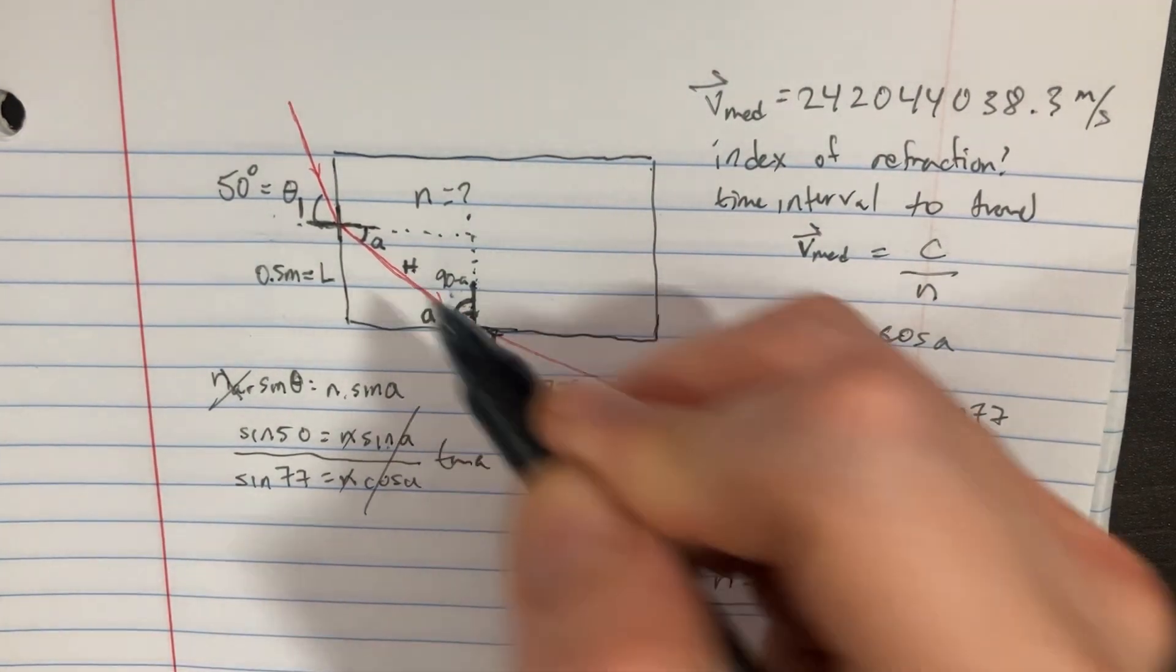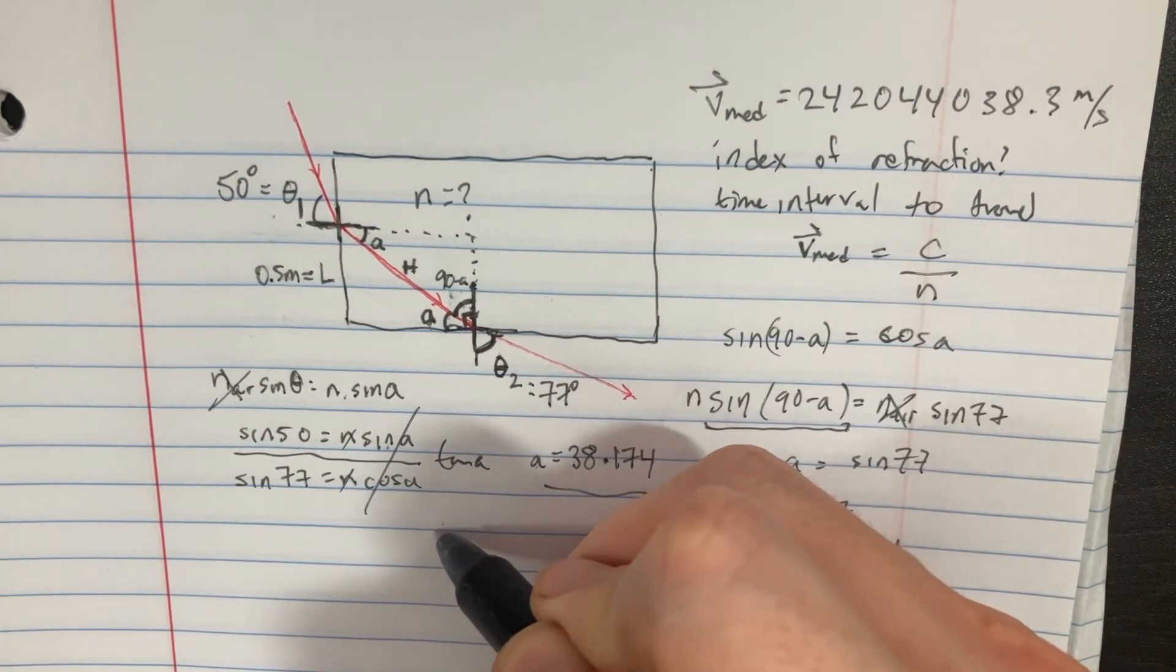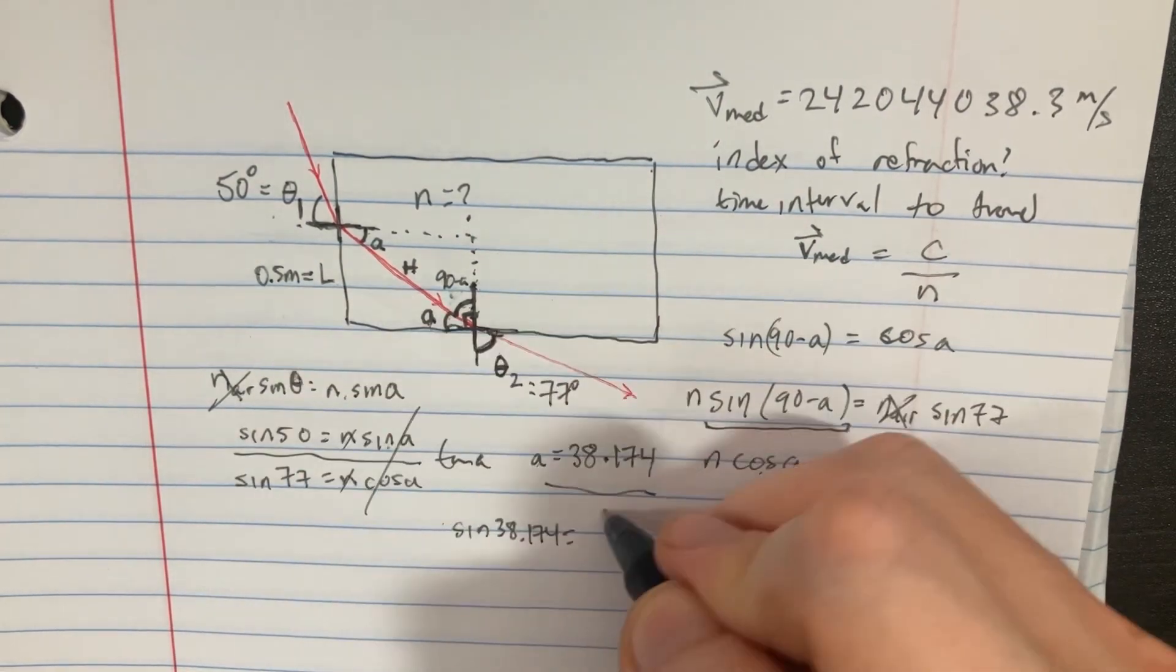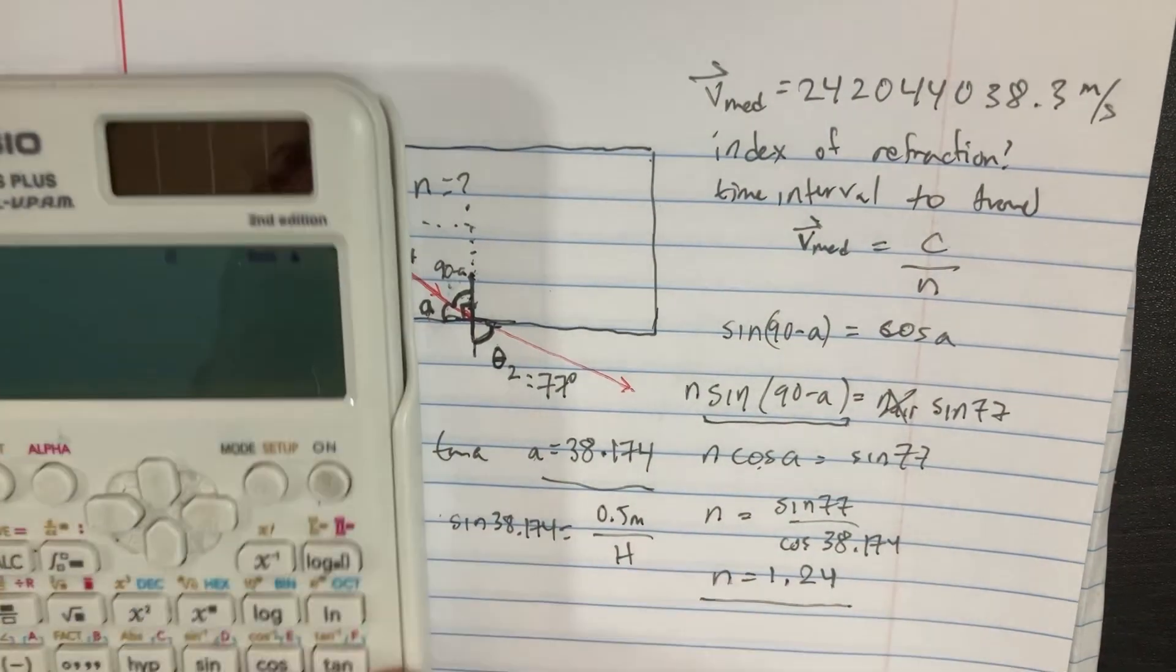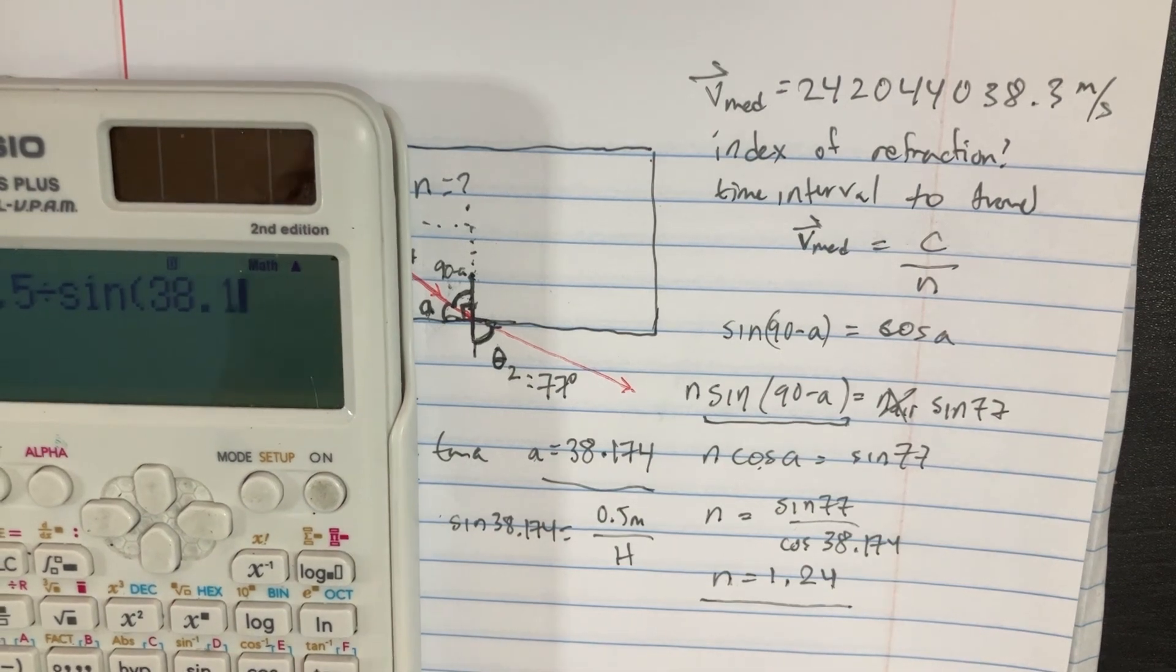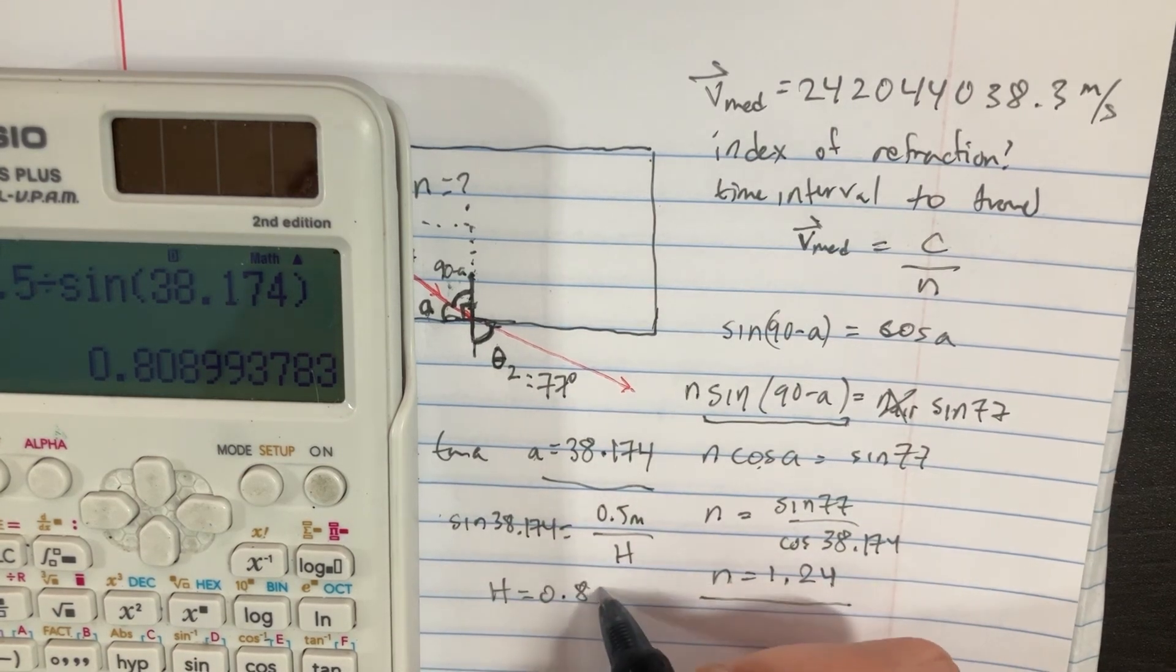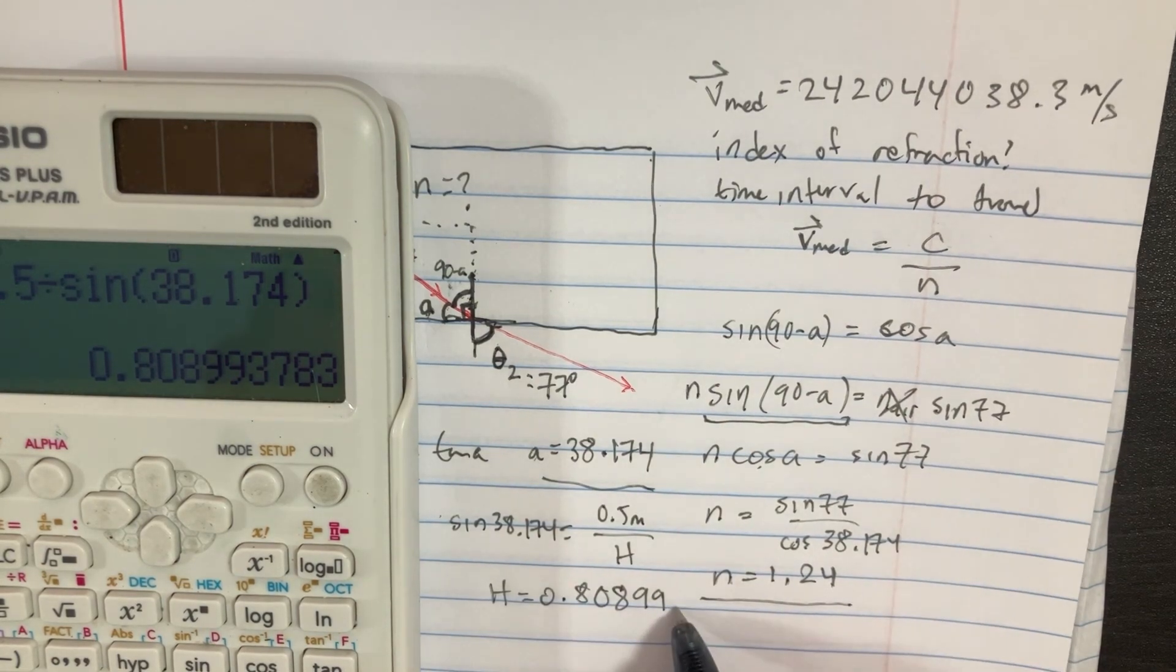Now let's see if we can find h. So if we know this angle A, that would be this one here. We could take the opposite over the hypotenuse. So the sine of 38.174 is equal to the 0.5 meters there over the h. So we can solve for h. Let's take 0.5 and divide that by the sine of 38.174. And we can see that h would be equal to 0.80899 meters.